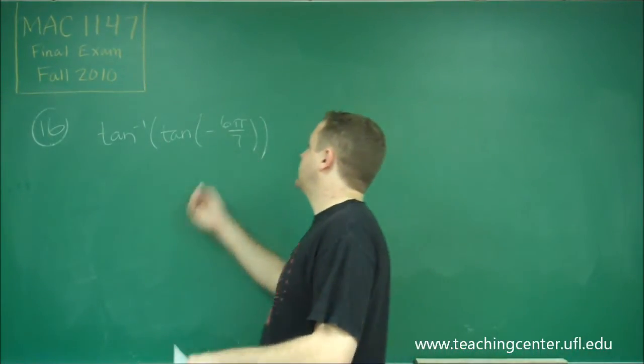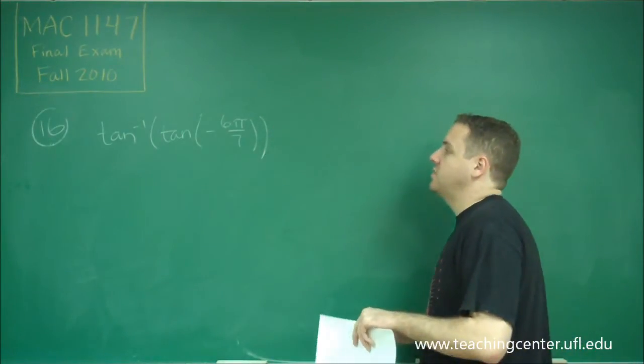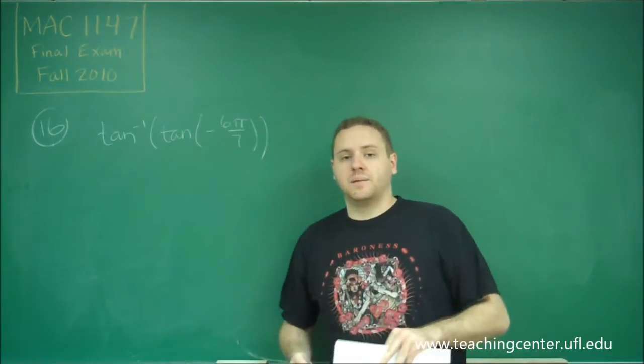So tangent of negative 6 pi over 7 will give you some value. And then you're going to do the arctangent of that value to get an angle back.